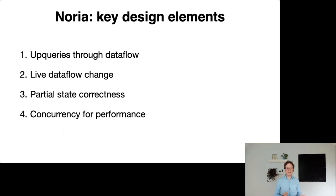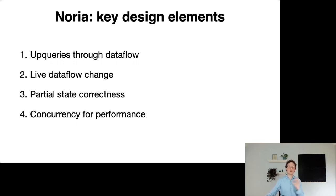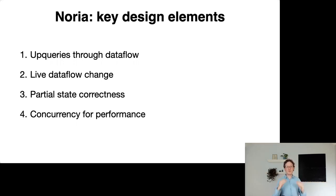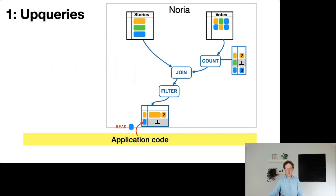I'll spend some time talking about four key design elements that make NARIA work. First, up queries — how NARIA recomputes missing entries on request, a sort of lazy computation. Second, how NARIA can change a live executing data flow, adding new materialized views with very low overhead and without pausing execution. Third, correctness — how we guarantee eventual consistency. And fourth, the concurrency model for high performance.